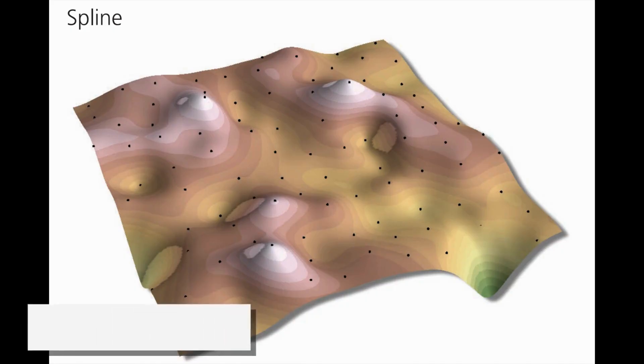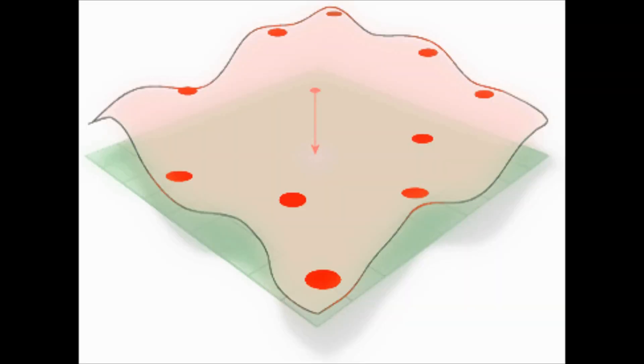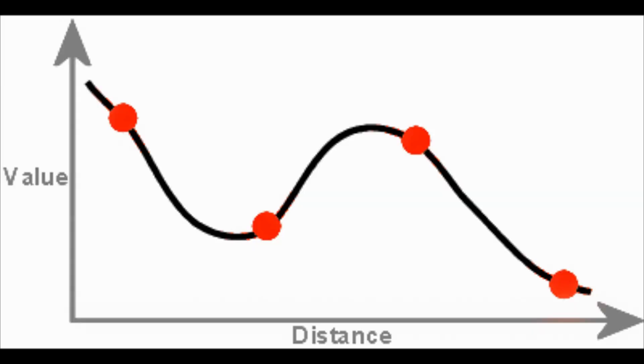Third, spline. The spline method is all about creating smooth surfaces. Think of it like bending a flexible sheet to pass through your known data points, producing a continuous and smooth surface. A surface created with spline interpolation passes through each sample point and may exceed the value range of the sample point set.